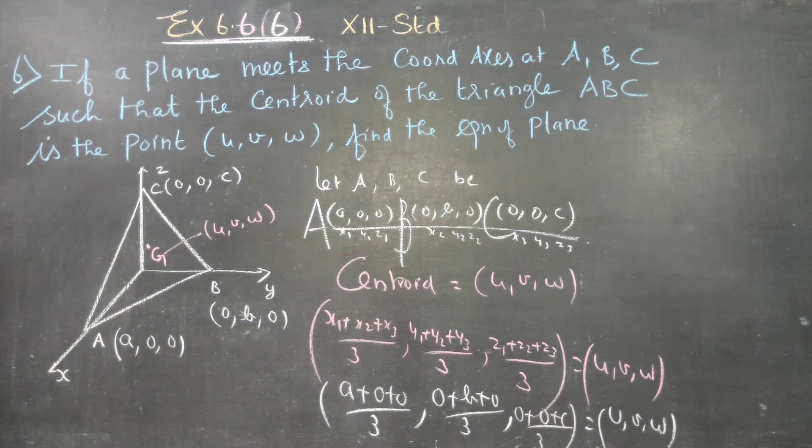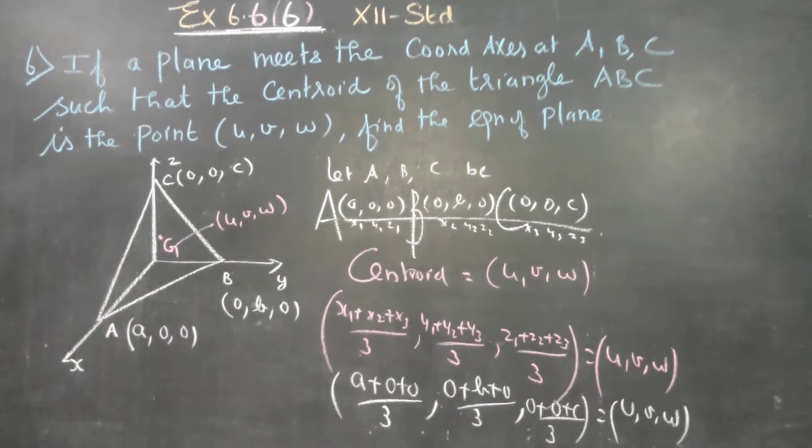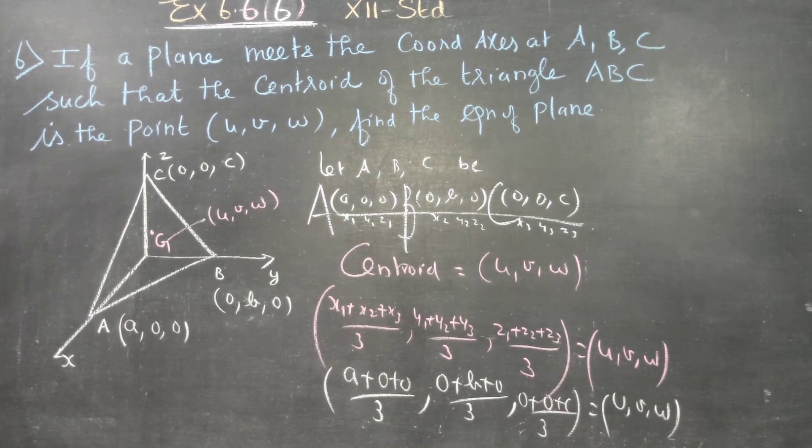Using the centroid formula for 3 dimensions, (a + 0 + 0)/3, (0 + b + 0)/3, (0 + 0 + c)/3 equals (u, v, w).